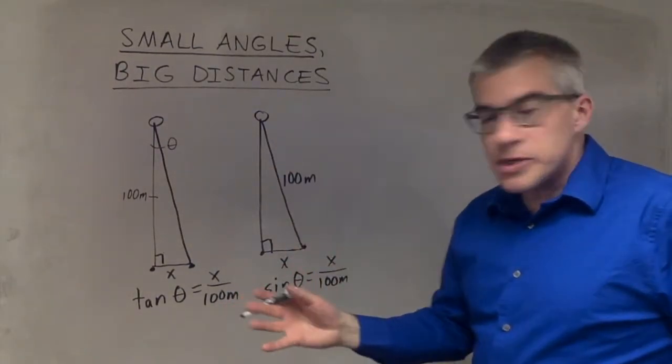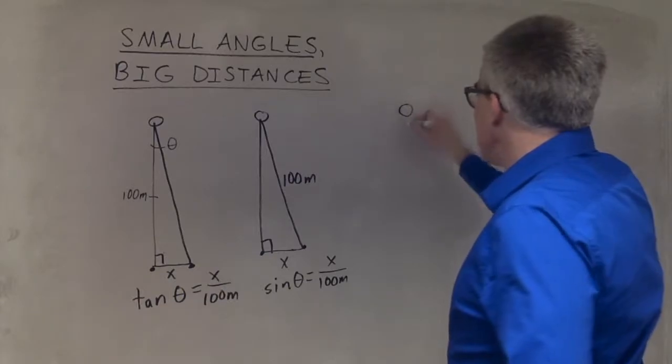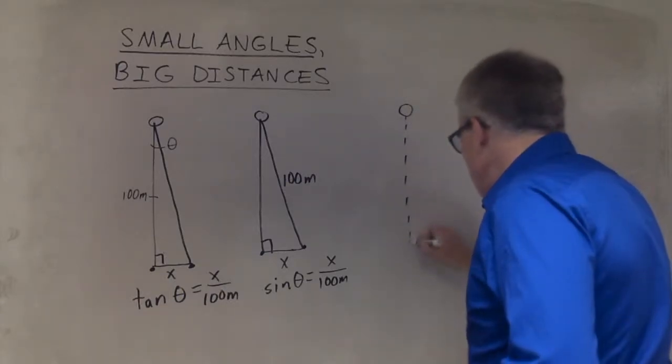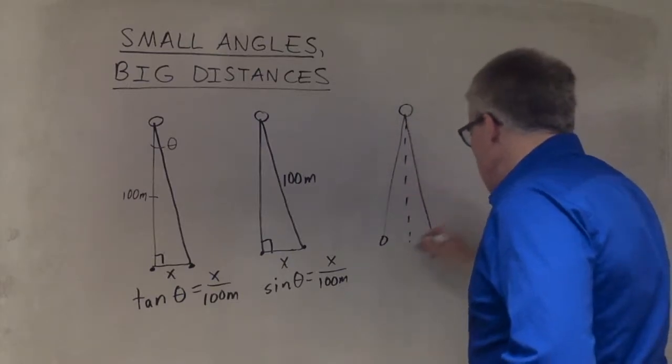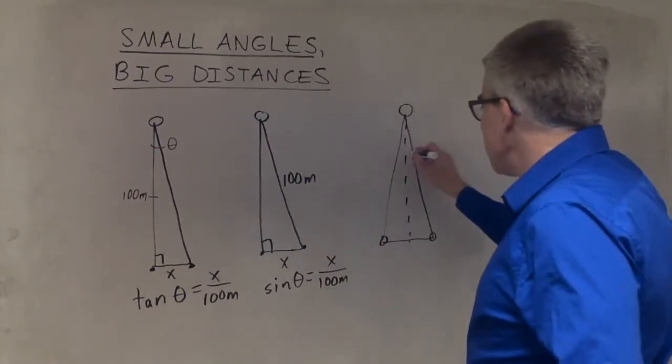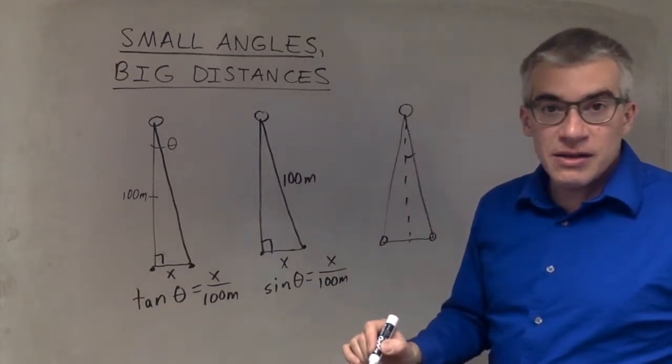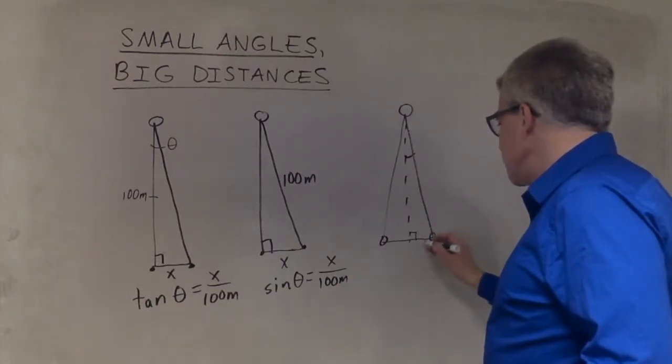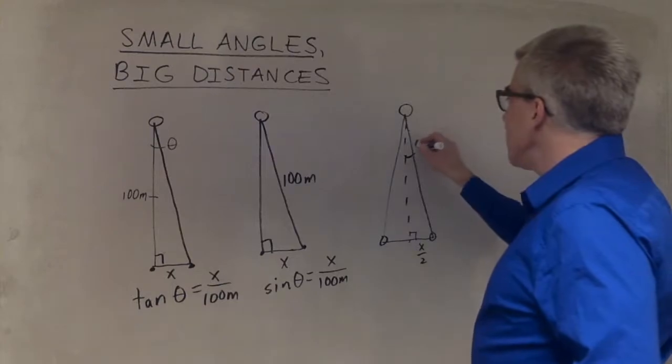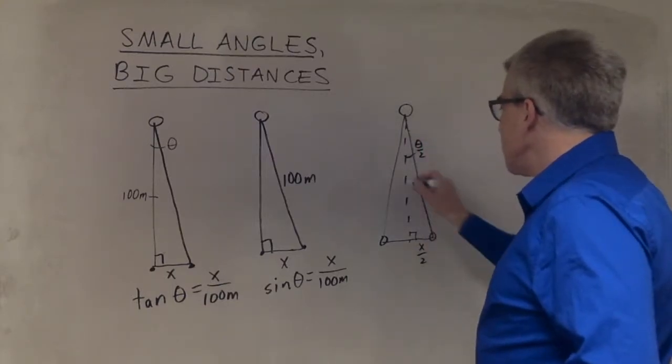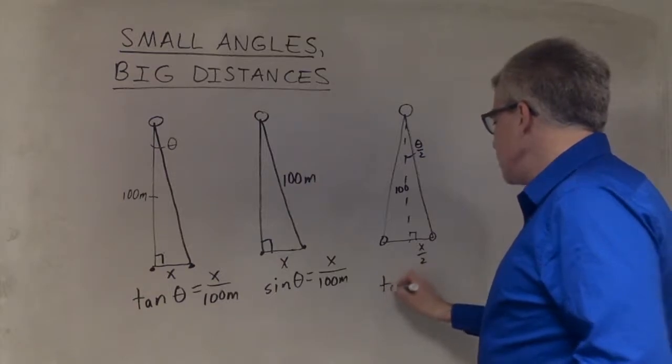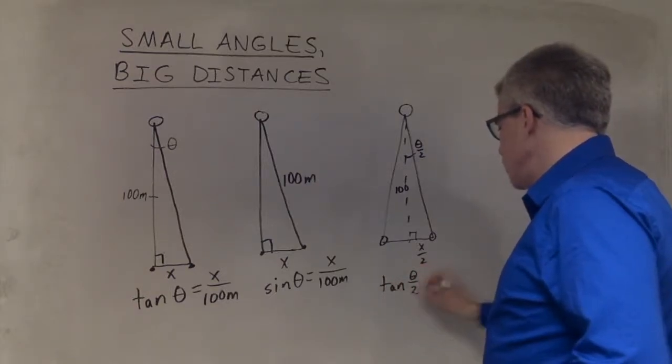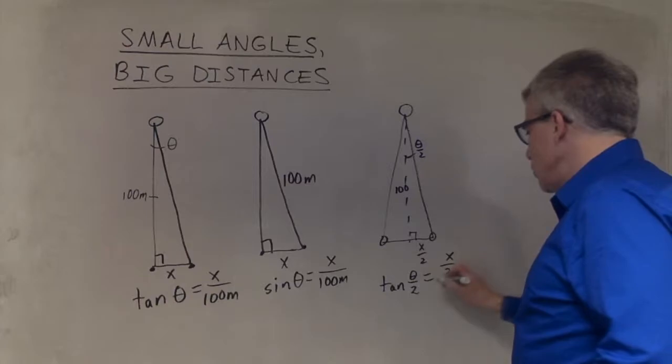So there's more ways we could do it. We could say, what if the bird is halfway between them? And we've got one here, we've got one here, and we want to know that. So then we would cut the angle in half and have 90 degrees and get x over 2 here and get theta over 2 here. And if this altitude were 100, then we'd have tangent of theta over 2 is x over 2 over 100.